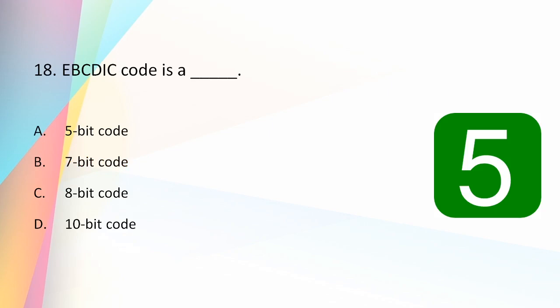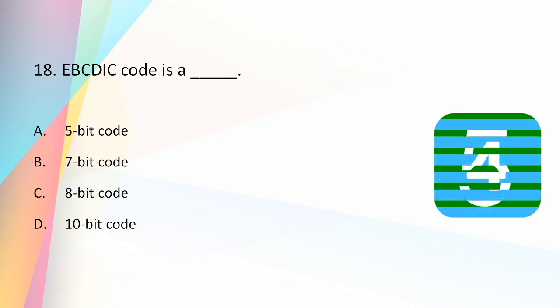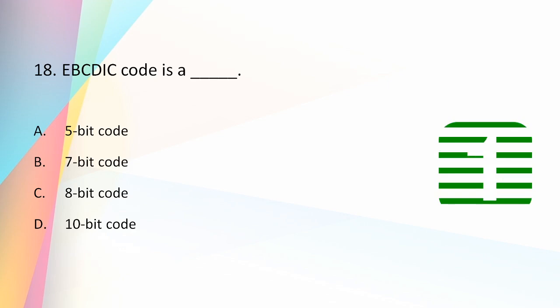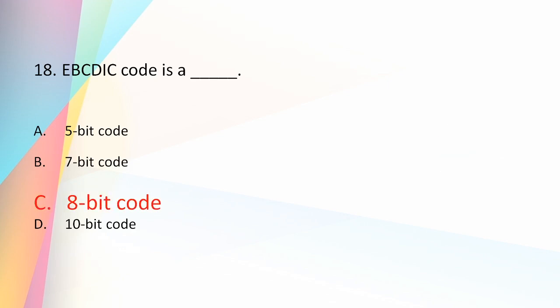EBCDIC code is a: 5-bit code, 7-bit code, 8-bit code, or 10-bit code? The answer is 8-bit code. EBCDIC stands for Extended Binary Coded Decimal Interchange Code. IBM invented this code to extend the binary coded decimal which existed at that time. It is an 8-bit code and therefore can accommodate 256 characters.